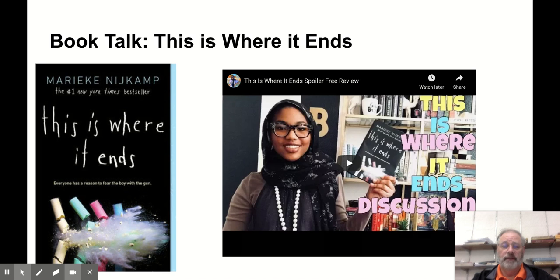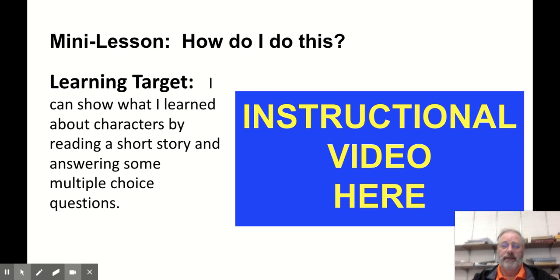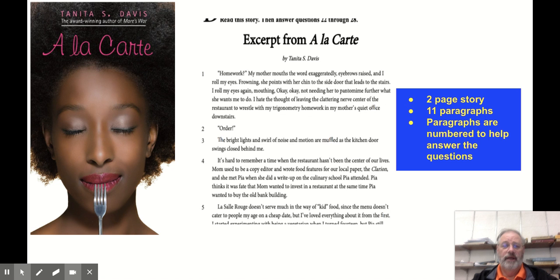Here's our book talk on slide four — you can watch that. My video would be right here on slide five. And here's slide six — here's what the story is going to look like. You can see in the middle here, 'Excerpt from A la Carte.' It's two pages, 11 paragraphs, and the paragraphs are all numbered. So when they ask you a question, they might say refer back to a certain paragraph and you can look quickly where that is. This will be attached to Google Classroom.